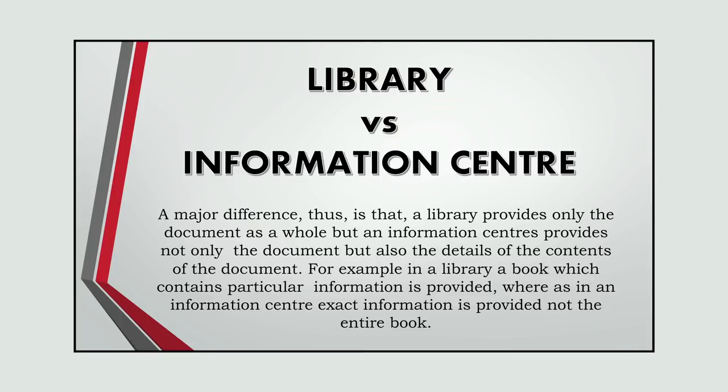How can we differentiate between a library and an information center? A library differs from an information center in many ways. Libraries provide macro documents to users, whereas information centers provide micro documents. They also differ in the type of documents stored, type and levels of users, and provision of information rather than the document. Documentation and information centers also involve analysis and presentation of information. A major difference is that a library provides only the documents as a whole, but information centers provide not only the document but the details of the content of the document. For example, a library has a book which contains particular information, whereas in an information center, exact information is provided — not the entire book.